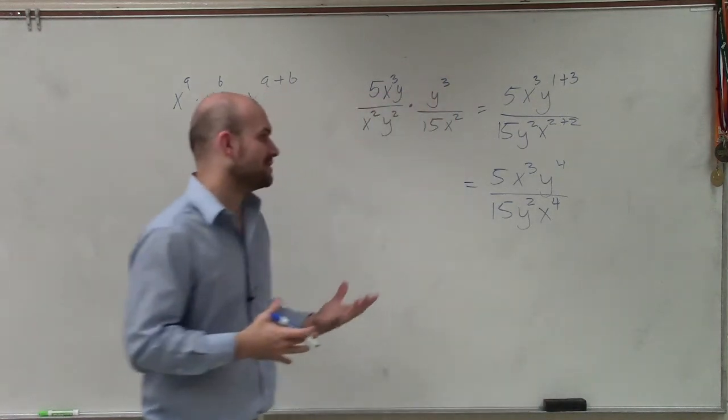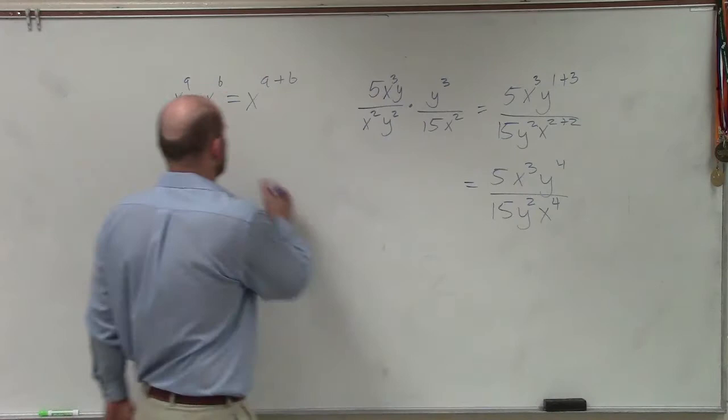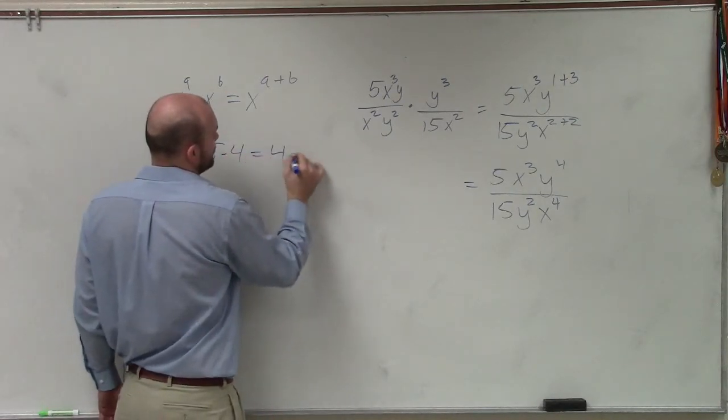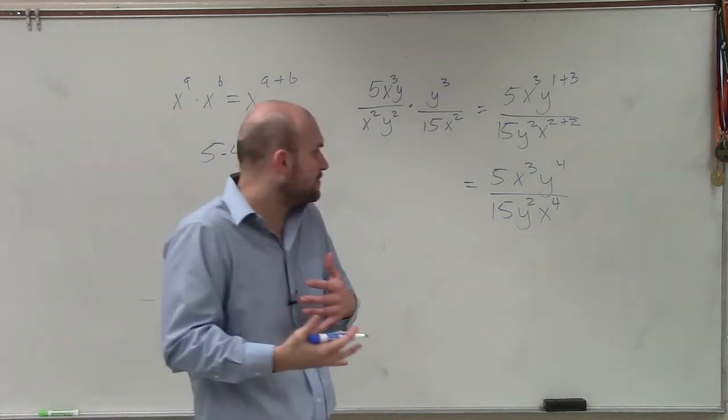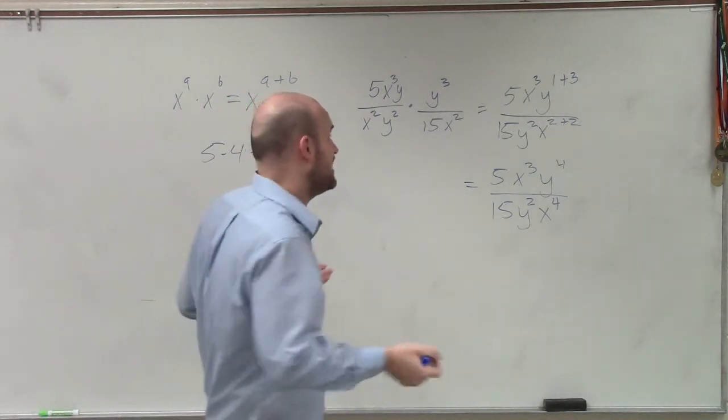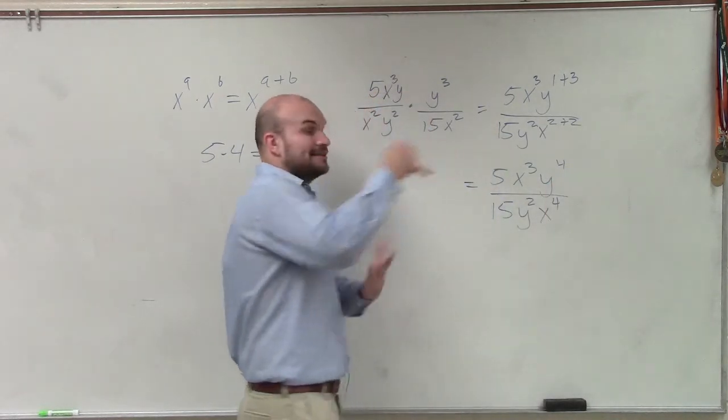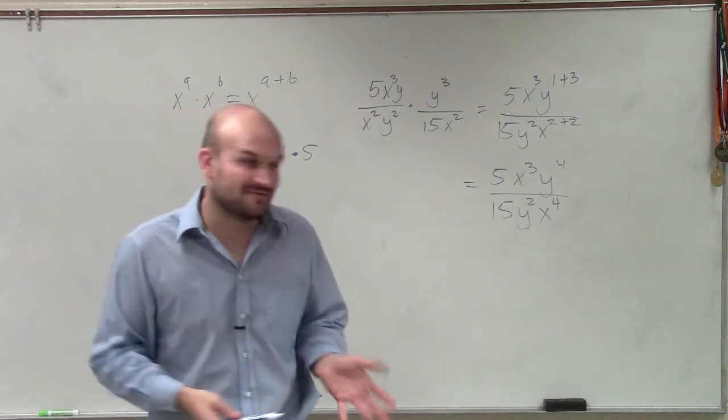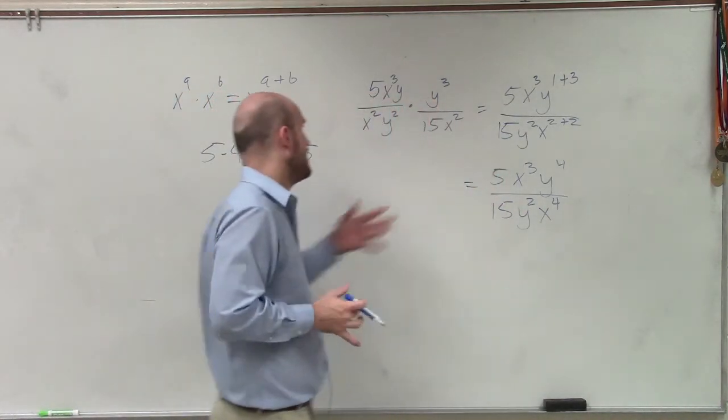Now, one thing I want you guys to understand is it doesn't matter which order you multiply these. If you have 5 times 4 equals 4 times 5, right? It doesn't matter which way, which order you multiply these. It also is not going to matter which order I'm going to be subtracting these. If these y's are not directly over each other, that's OK. If the x's aren't directly over each other, that's OK. But the operation of division is still being applied.